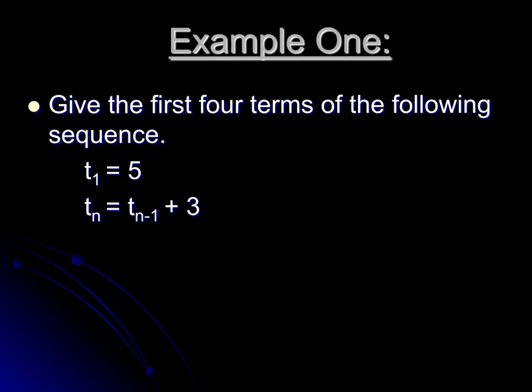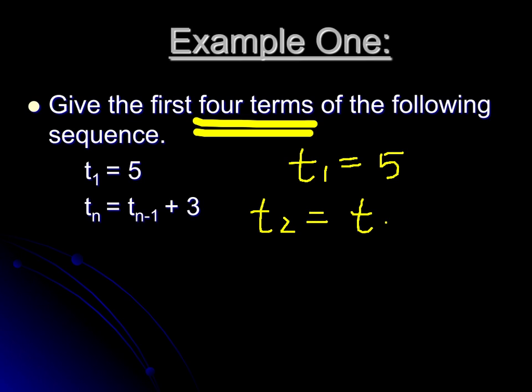Here's an example of a recursive definition. It says give the first four terms, so we're looking for t₁, t₂, t₃, and t₄. t₁ we're given, so that one's all set. We have t₁ equals 5. For t₂, how that's going to work is tₙ₋₁ is the previous term, so we want to take t₁ and add 3 to that. So our t₂ is going to be 5 plus 3, or 8.